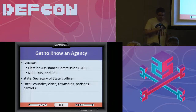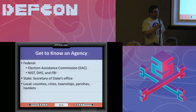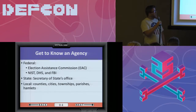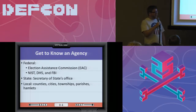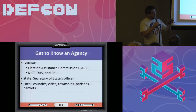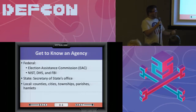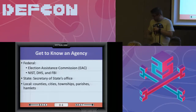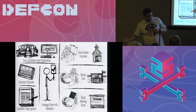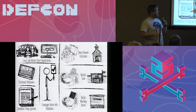At the state level, you have the Secretary of State's office. They are primarily the lead election officer, deciding how elections are run in their given state or territory. They're typically third in line of succession in a state, so it's a fairly powerful elected position. And then at the local level — counties, cities, townships, parishes, hamlets — these different small geographical entities are where elections are actually run, because they actually do them.